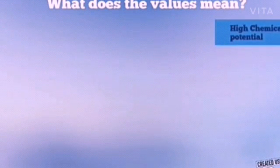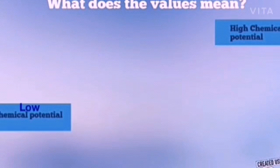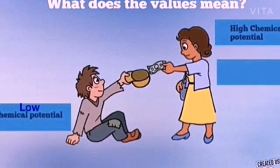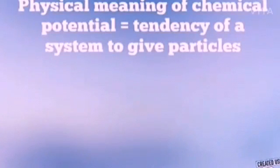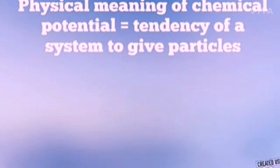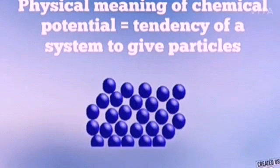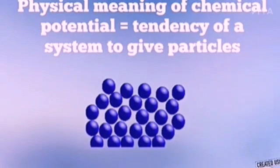Like in the example shown, a rich person is said to be at high chemical potential and a poor person at low chemical potential. Chemical potential is the tendency of a system to give particles and is dependent on the surface energy of the driver and the number of particles. Adsorption also occurs due to unbalanced forces on the surface of the adsorbent, so adsorbate sits on adsorbent.